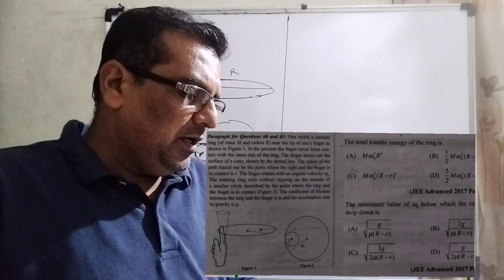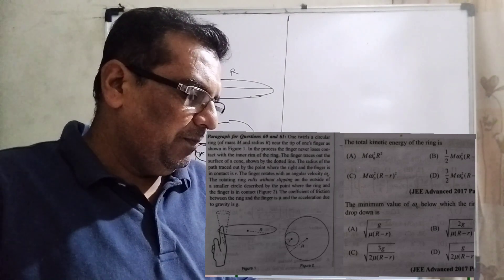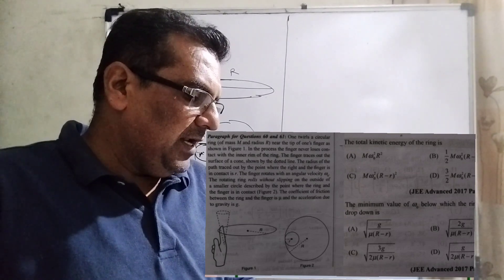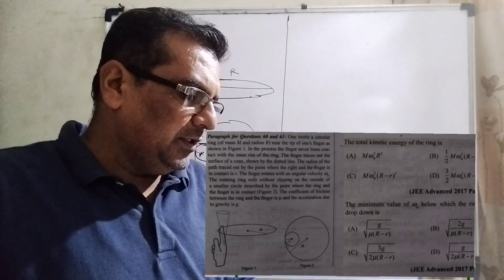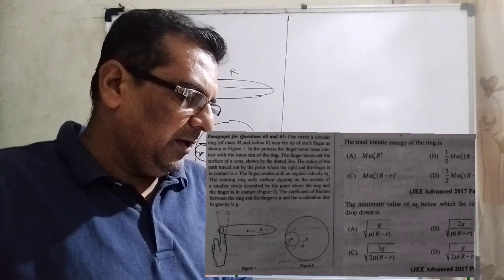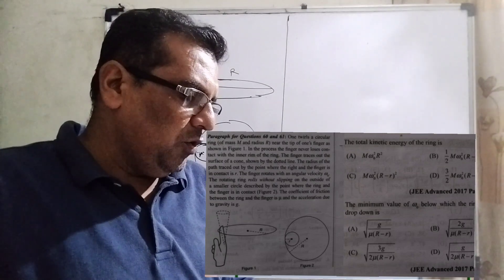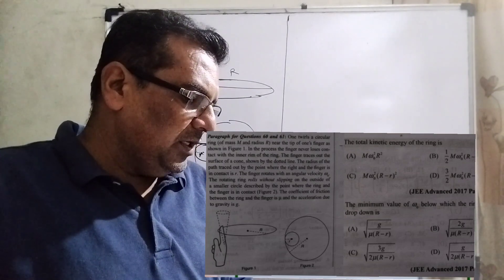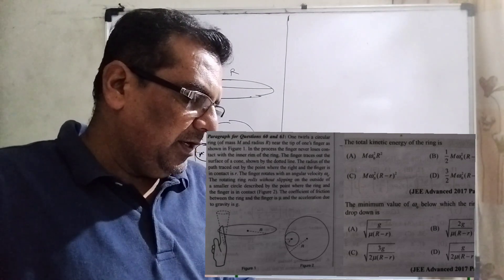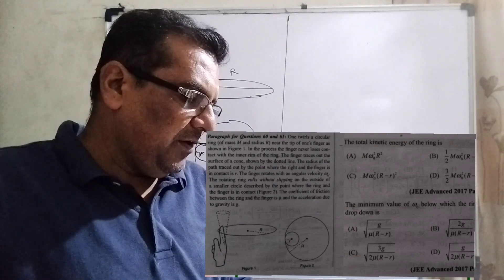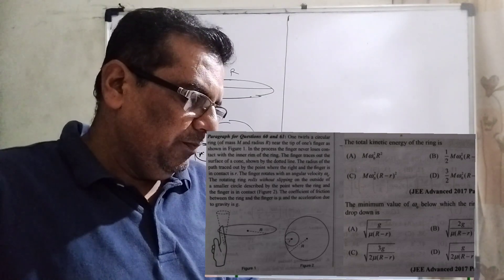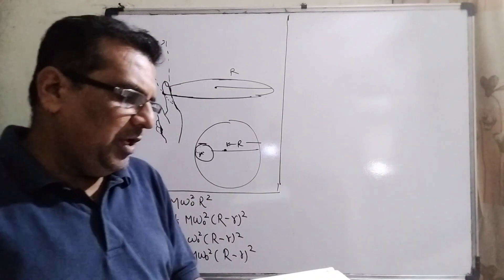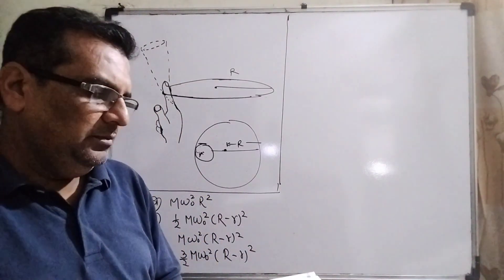In the process, the finger never loses contact with the inner rim of the ring. The finger traces out the surface of a cone shown by the dotted line. The radius of the path traced out by the point where the ring and the finger are in contact is smaller r. The finger rotates with angular velocity ω₀. The rotating ring rolls without slipping on the outside of a smaller circle described by the point where the ring and finger are in contact. The coefficient of friction between the ring and the finger is μ, and the acceleration due to gravity is g. This question was asked in JEE Advanced 2017, Paper 2.